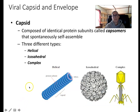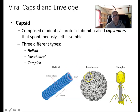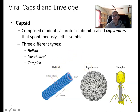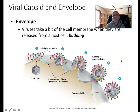Capsids can have different shapes — helical or icosahedral — composed of a single repeated protein called a capsomer. There's also a more complex structure seen in bacteriophages, which infect bacterial cells. Their structure is much more complex than helical or icosahedral animal viruses — they literally look like little robot spiders in an electron microscope.